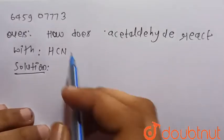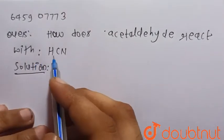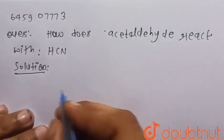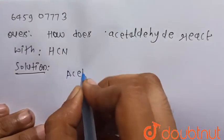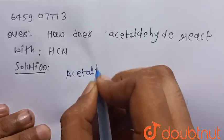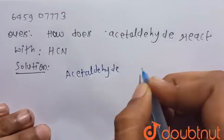Hello everyone, consider the given question: how does acetaldehyde react with HCN, that is hydrogen cyanide? So we know that acetaldehyde is CH3CHO.